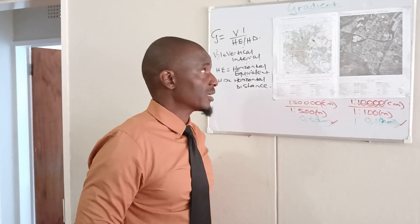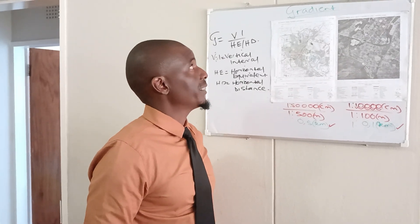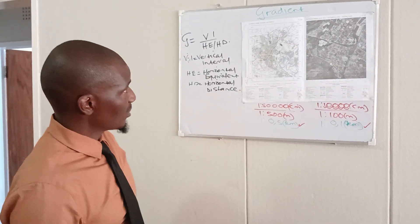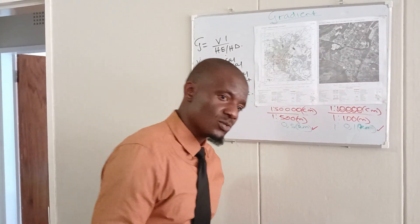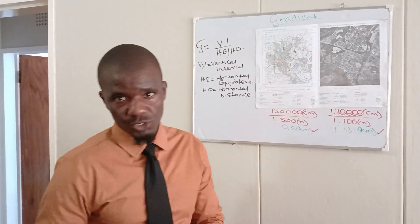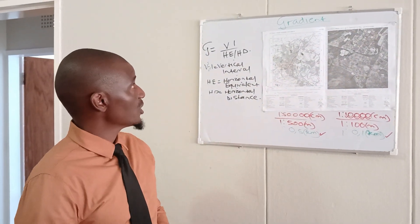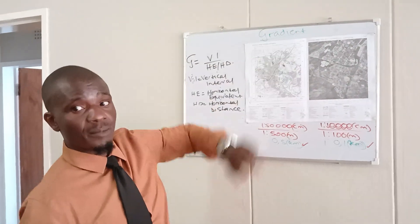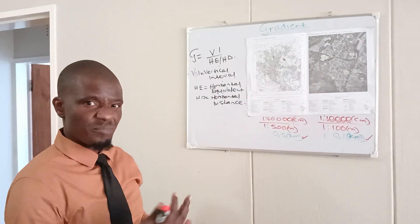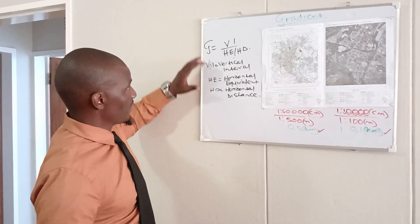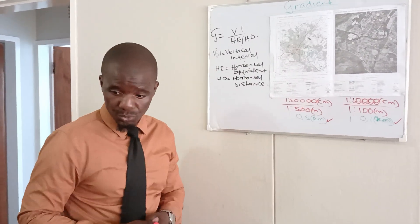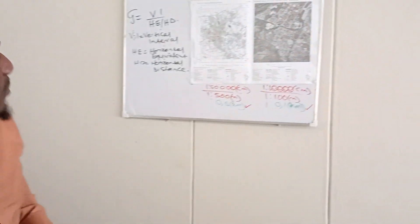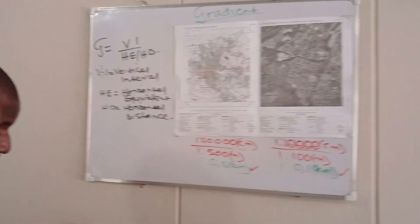Another calculation I'm going to do today is gradient. Obviously, when you talk about the gradient, you're looking at the steepness or the gentleness of the slope. That's basically what we are concerned with when we are calculating gradient — the steepness or the gentleness of the slope. The first thing you need to be aware of when calculating gradient is you're supposed to know your formula.